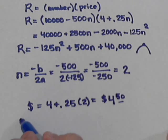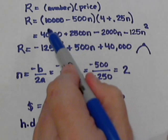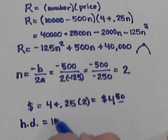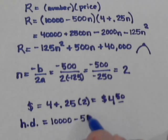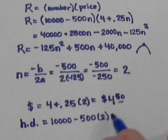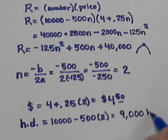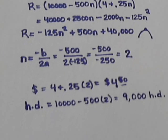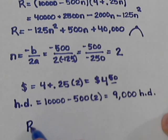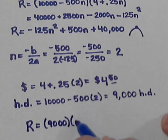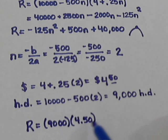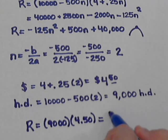How many hot dogs will we sell? We've got that formula — we normally sell 10,000, but we're going to lose some because we raised the price. So minus 500 times 2, that's 1,000 less. So we can expect to sell 9,000 hot dogs. And then what will our revenue be? Revenue is the amount we're selling, 9,000, times the price we're selling it for, $4.50. This gives us a maximum revenue of $40,500.